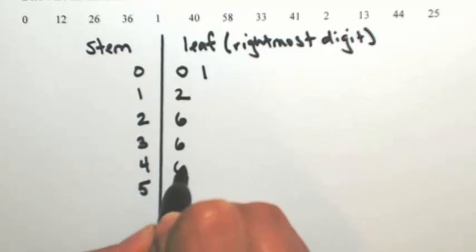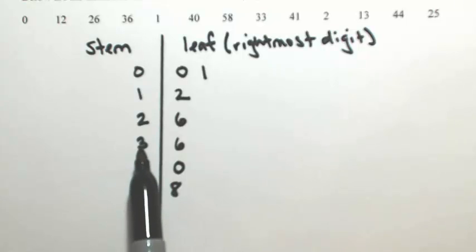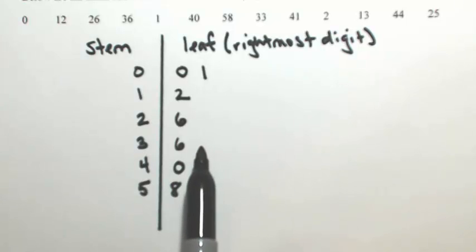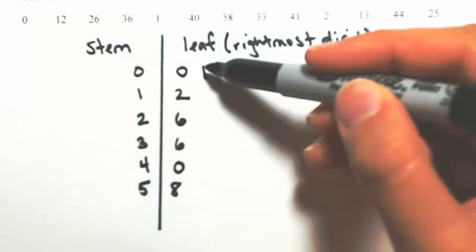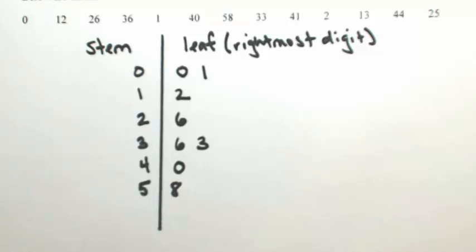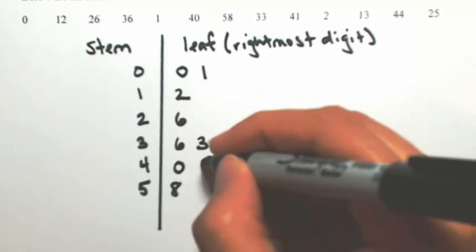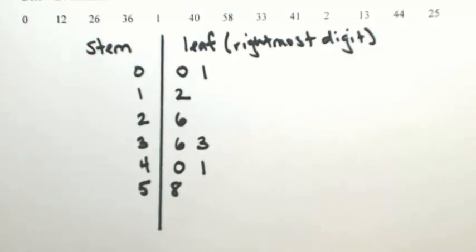For 58, I write an 8. For 33, here's what I mean by keeping spacing consistent: I'll put a 3 after the 3 stem, but make sure you keep it in line with the 1 above it. For 41, keep the 1 under that 3. Keep it consistent.